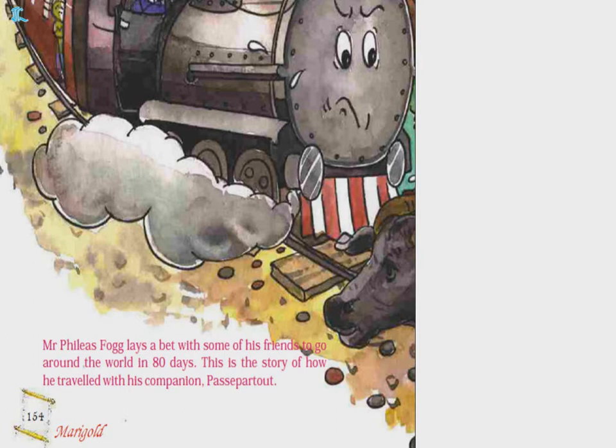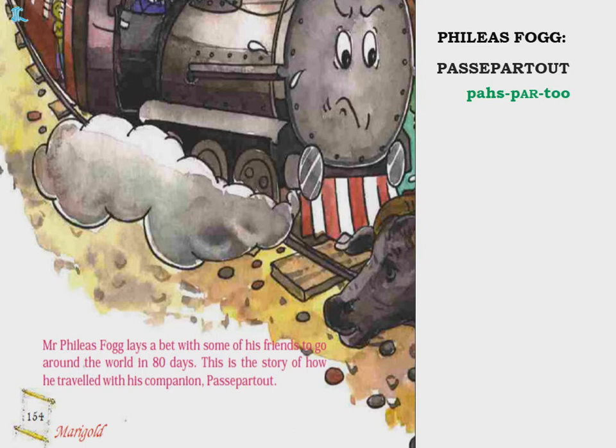Now, Mr. Phileas Fogg lays a bet with some of his friends to go around the world in 80 days. This is the story of how he travelled with his companion Passepartout. There are two main characters in this lesson — Mr. Phileas Fogg and his companion Passepartout.